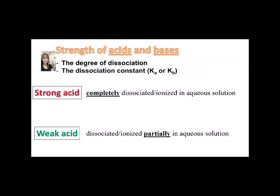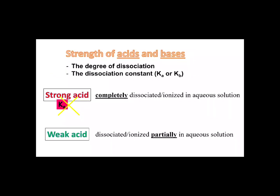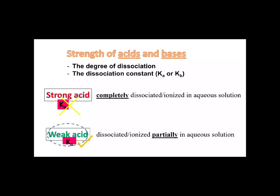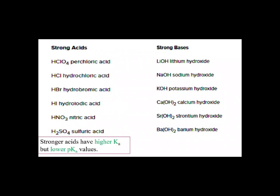Always bear in mind that strong acid has no Ka value and strong base has no Kb value. Ka is most often associated with weak acids, or acids that do not completely dissociate in solutions. Here are some examples of strong acids and strong bases.